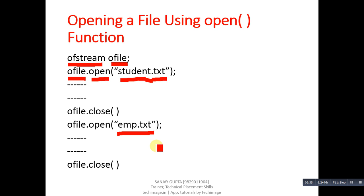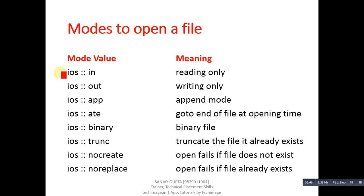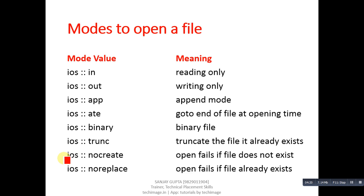There are different modes to open a file. ios::in is for reading only, ios::out for writing, ios::app for append mode which adds at the end of the file, ios::ate goes to the end of file at opening time, ios::binary opens a file in binary mode, ios::trunc truncates the file if it already exists, ios::nocreate fails if the file doesn't exist, and ios::noreplace fails if the file already exists.